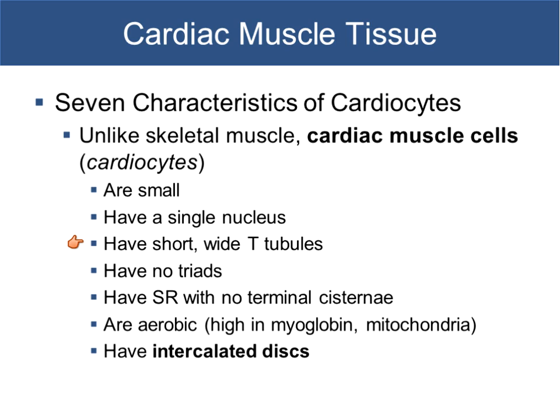There are T-tubules in cardiac muscle, but they're not nearly as narrow as in skeletal muscle — they're much shorter and wider. In addition to a different structural configuration of the T-tubules, there also aren't any triads. The triad consisted of the sarcoplasmic reticulum, terminal cisternae, and the T-tubules. The sarcoplasmic reticulum, which is still found in cardiac muscle, is configured differently than it is for skeletal muscle.